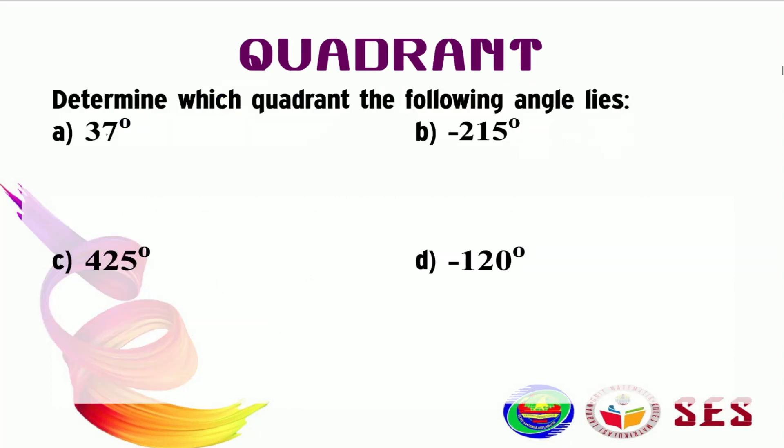Let's move on to quadrant. As I said earlier, the Cartesian plane is equally divided into 4 quadrants. The first quadrant, the second quadrant, the third quadrant, and the fourth quadrant.